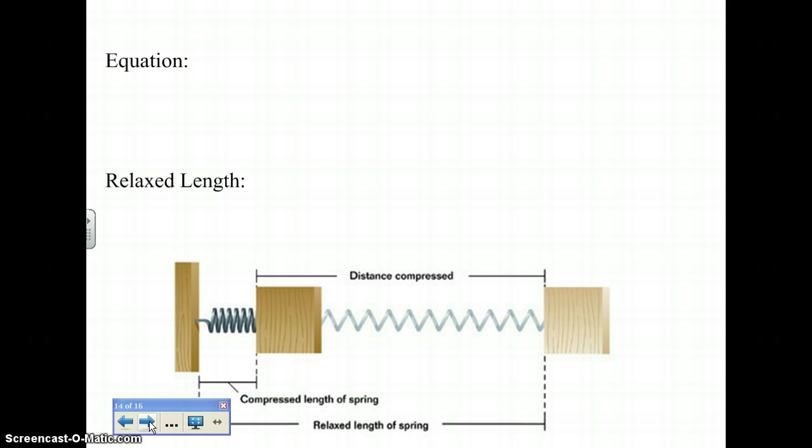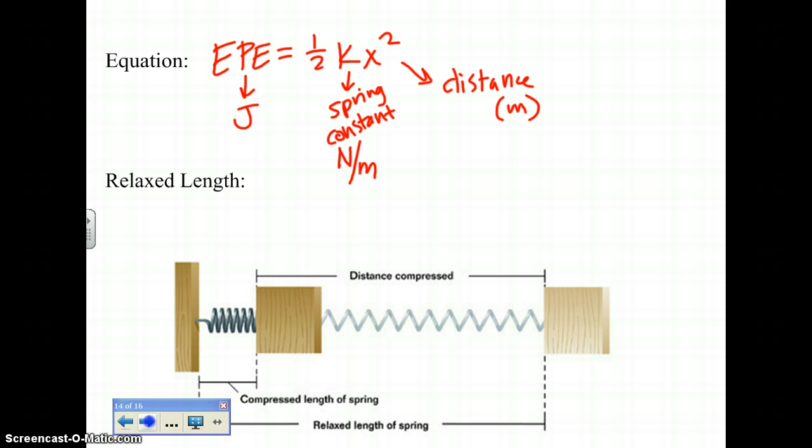Moving right along. The equation for your elastic potential energy is EPE equals one-half kx squared, whereas EPE is your energy, which will be measured in joules. Your k is called your spring constant, and your spring constant is going to be measured in newtons per meter. And then your x is your distance, although it is a displacement, which will be measured in meters. Definition for relaxed length is length of a spring when no external forces are acting on it.